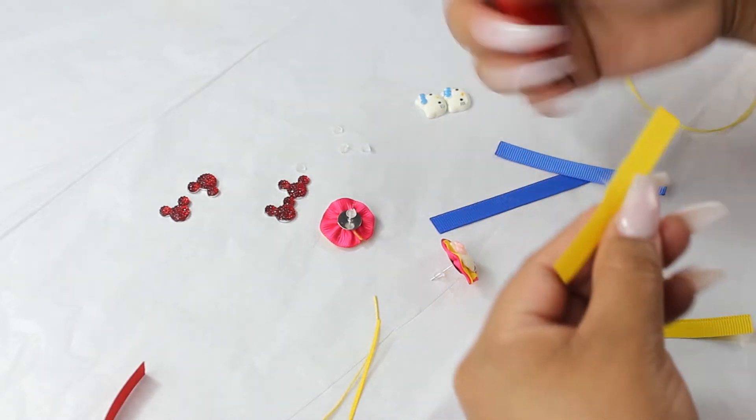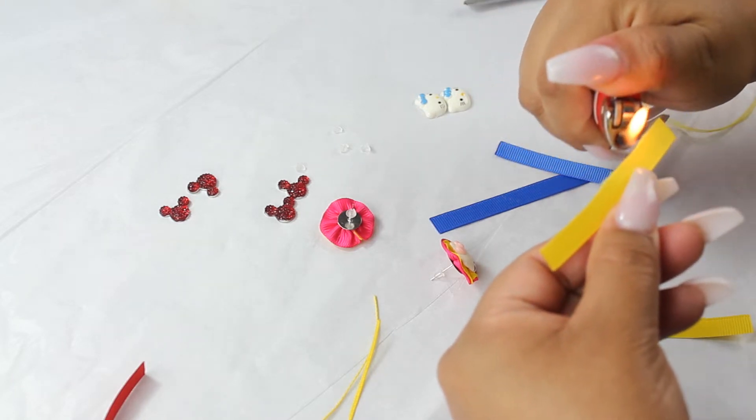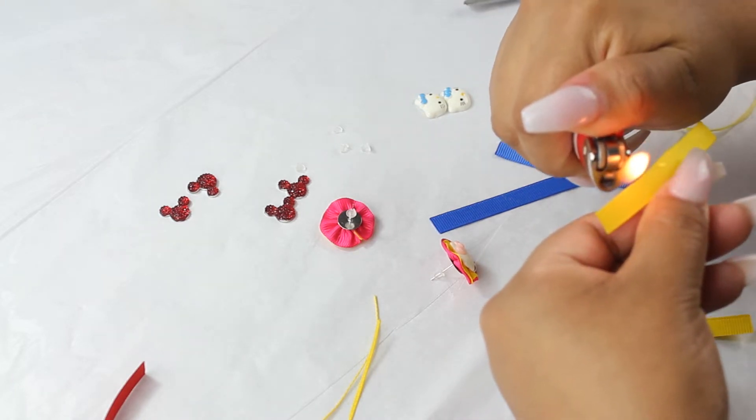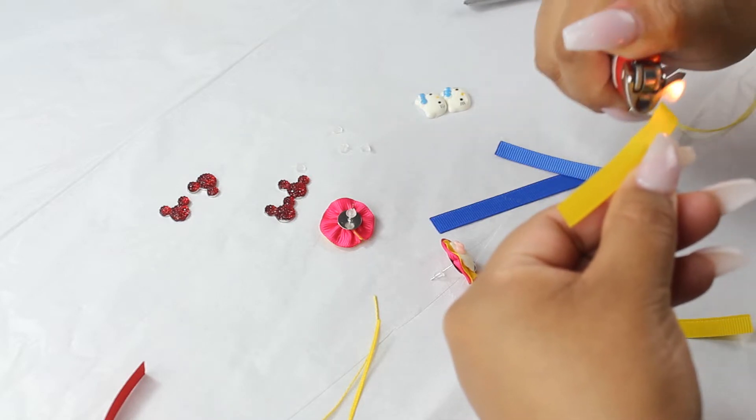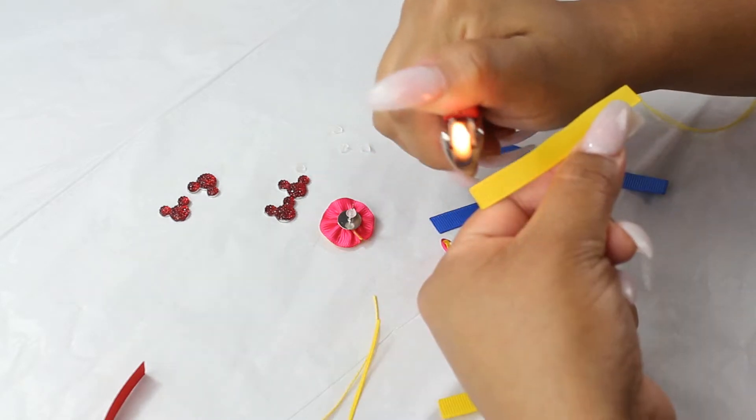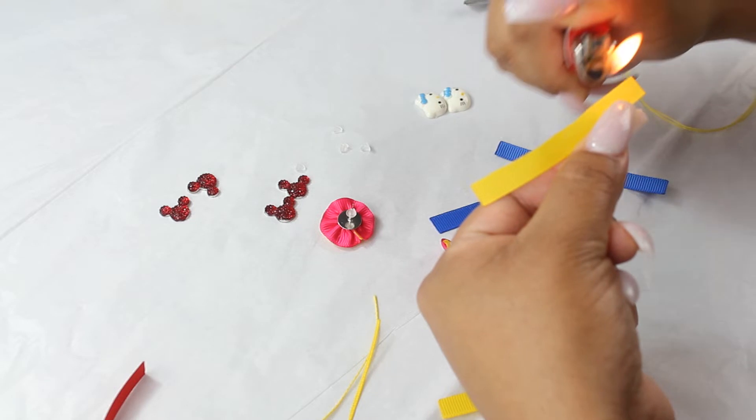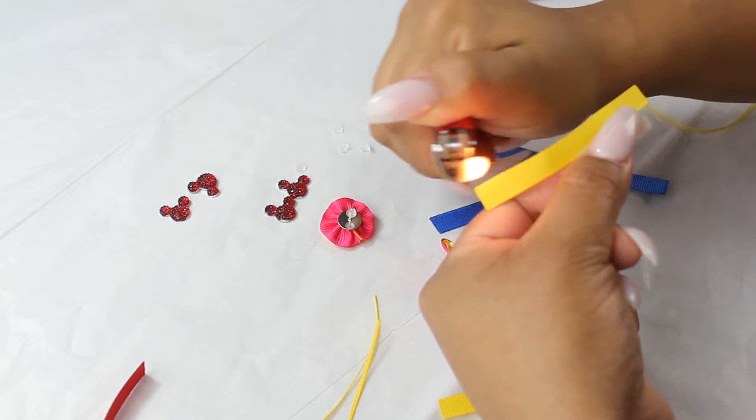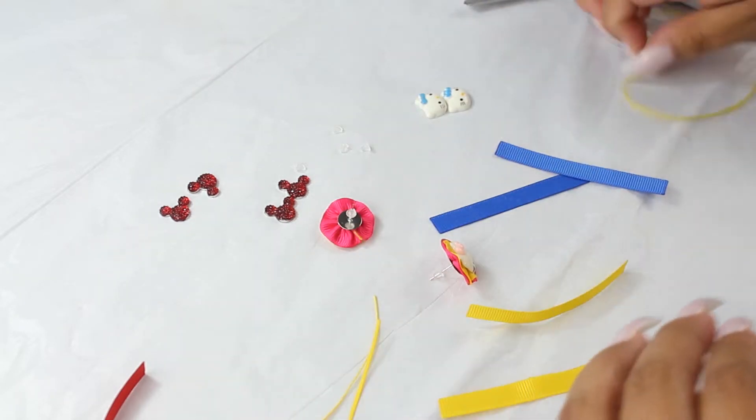Then you'll need your lighter. You're going to heat and seal that edge that you just cut off. Just be careful. I love making these little earrings. My Haley loves them. I make them during Christmas time.